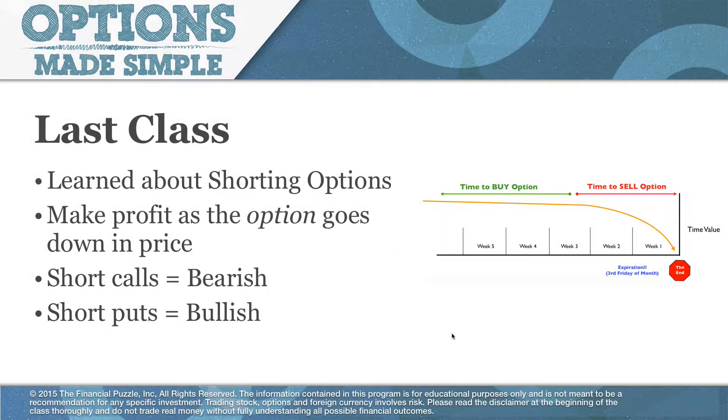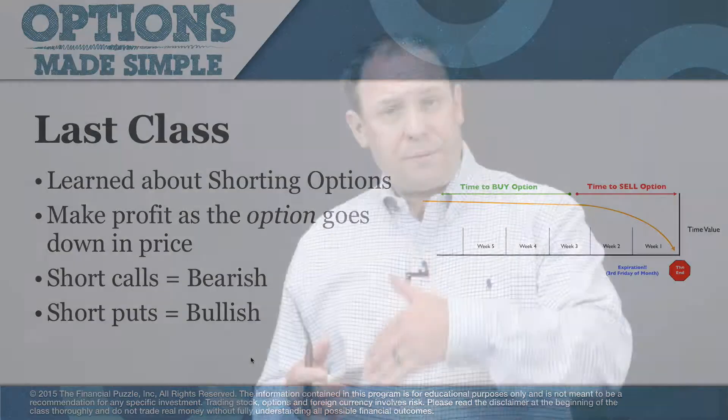When we short calls it's a bearish trade; when we short puts it's a bullish trade. A call option is going to go down as the stock goes down, so if we shorted it we want the stock to go down. If we short a put, we want the put to go down, and the only way that's going to happen is if the stock goes up. So when we short puts it's a bullish trade, and when we short calls it is a bearish trade.